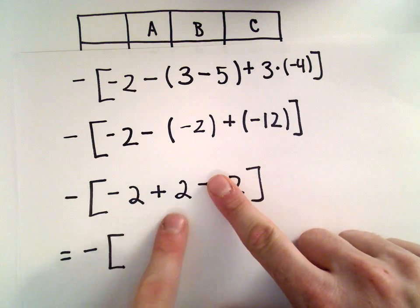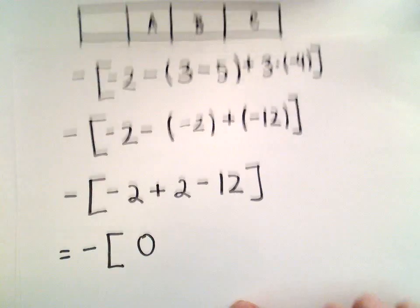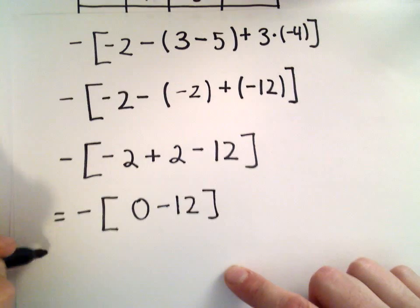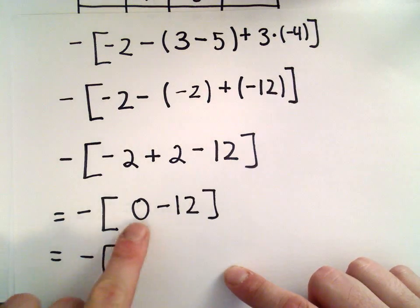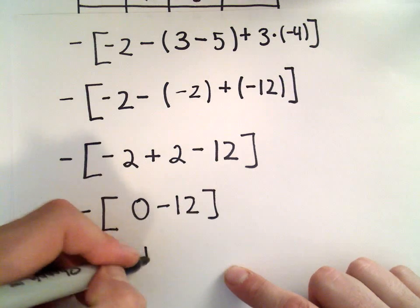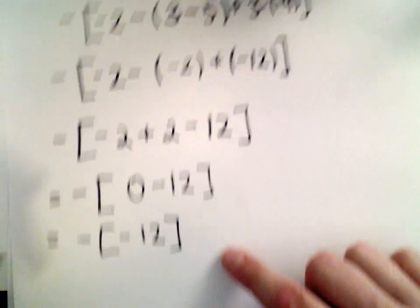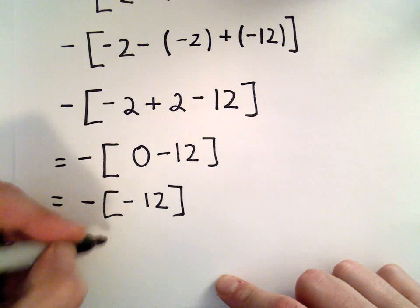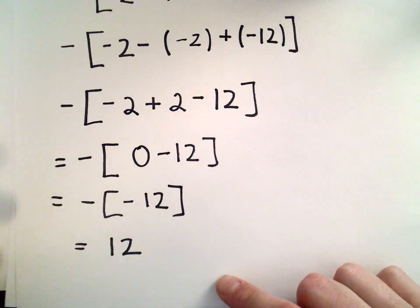Well, negative 2 plus 2, that's going to give me 0 minus 12. 0 minus 12, that's going to be negative 12. And a negative and a negative is the same thing as a positive. So we'll be left with positive 12.